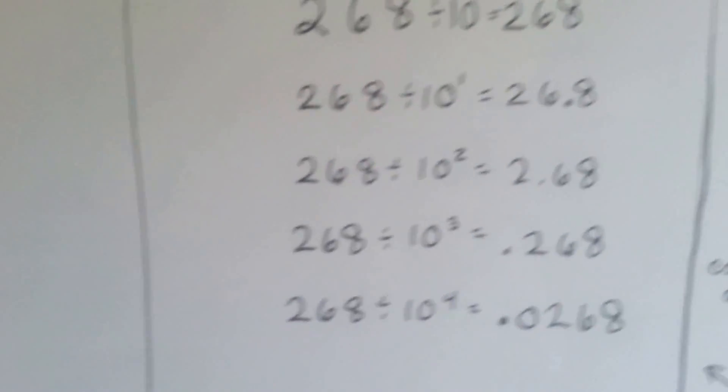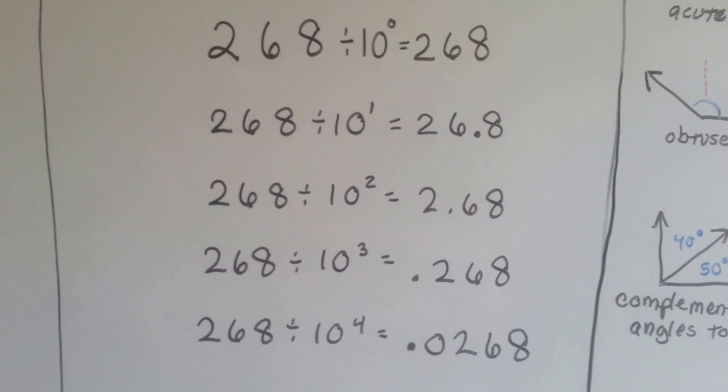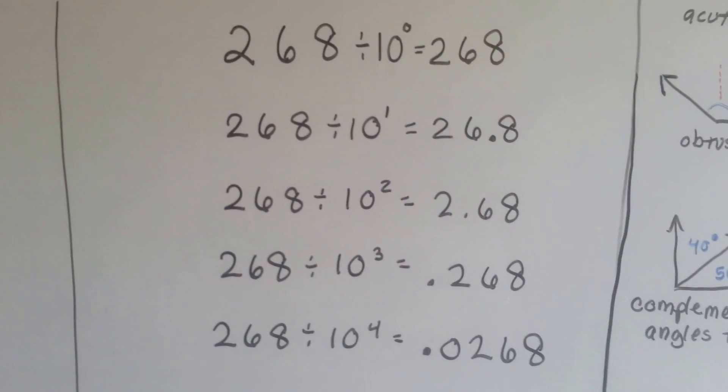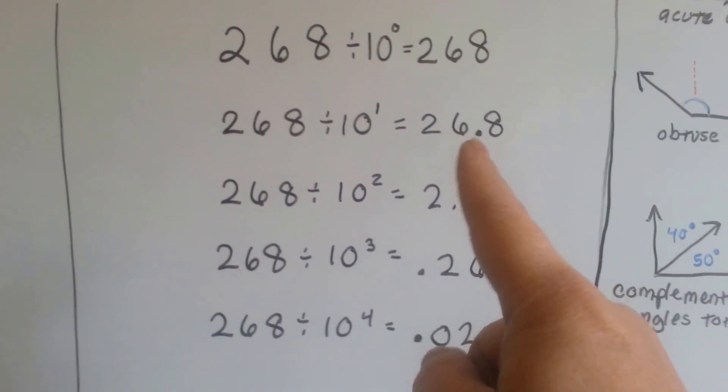When we're doing the powers of 10 and exponents, 10 to the 0 is equal to 1, so 268 divided by 1 is 268. To the first power, the decimal point moved the 1 spot from behind the 8 in between the 6 and the 8.